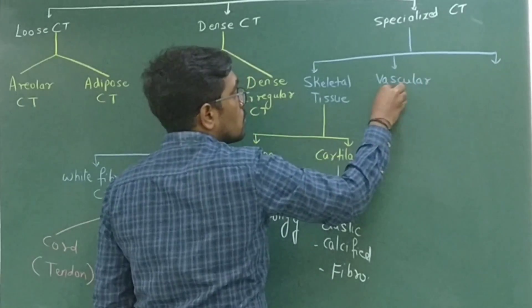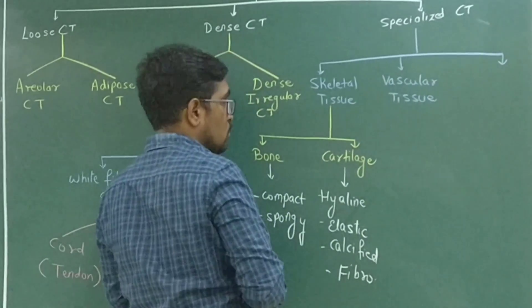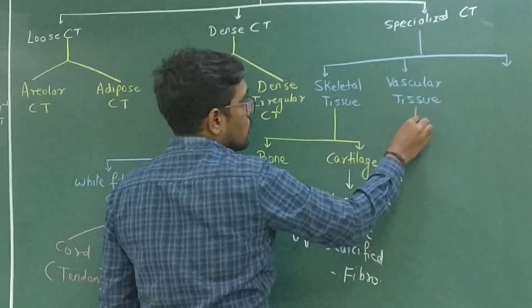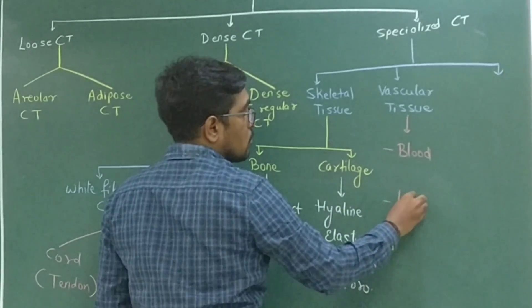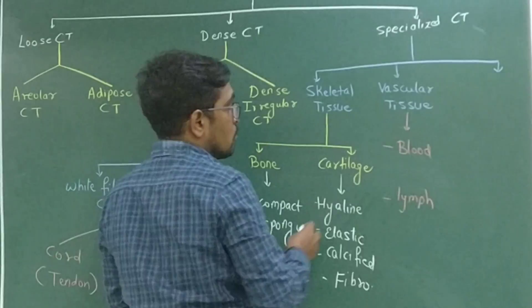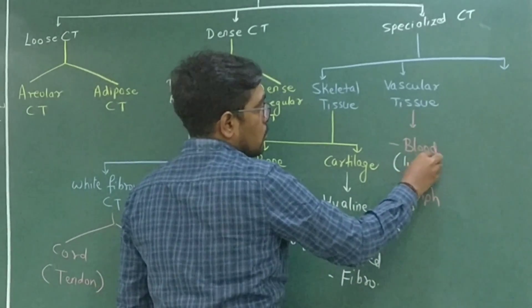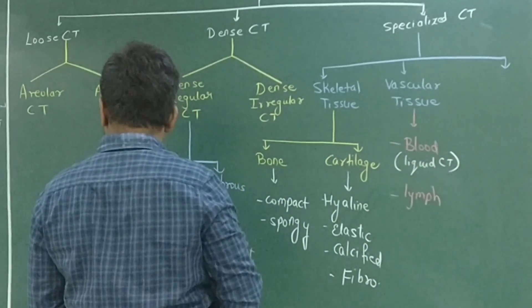When we talk about vascular tissue, that is again a type of specialized connective tissue. It includes two parts: the blood and the lymph. Whenever we talk about blood, just remember it is the only connective tissue which is in liquid state. Liquid tissue is only blood, which is a connective tissue.